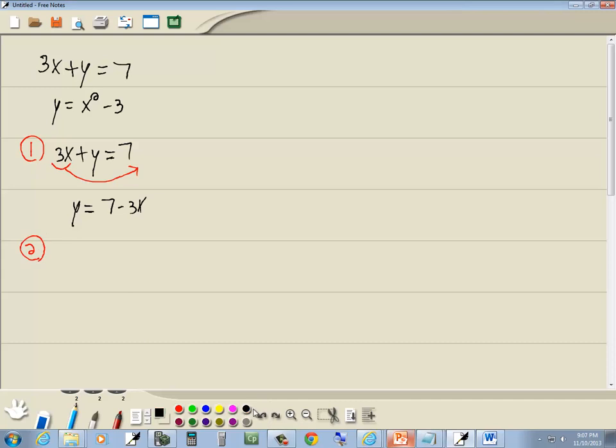Step 2. We want to plug this into your other equation. So our other equation is y is equal to x squared minus 3. And we just said that y is equal to 7 minus 3x, so we're going to replace the y here with 7 minus 3x. So we've got 7 minus 3x is equal to x squared minus 3.